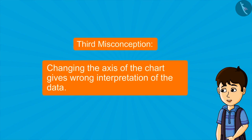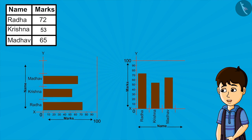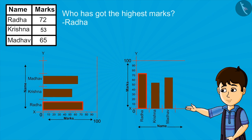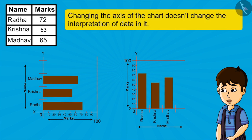Some people also believe that changing the axis of the chart gives wrong interpretation of data. Look at both these charts carefully. We have only changed the coordinate axis, but still we are getting the same information from the data — who has got the highest marks, the difference between the highest and lowest marks, etc. So we can say that changing the axis of the chart doesn't change the interpretation of data in it.